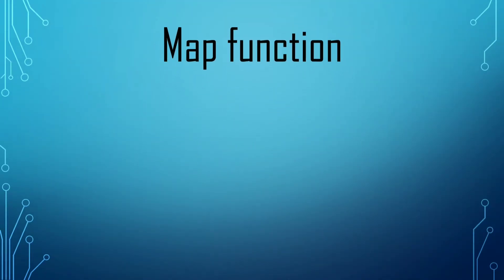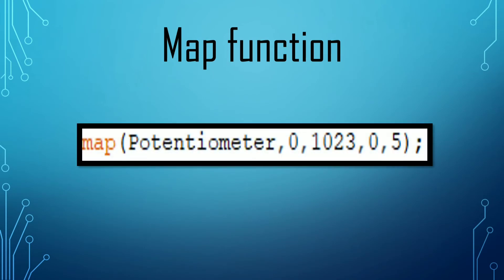Let us now know about map function. Here I have given a simple format of map function. Firstly, we will have to write the name in which we have stored the values. And for potentiometer, we have to convert the values into volts. So we have to firstly write the original values, which is 0 to 1023.